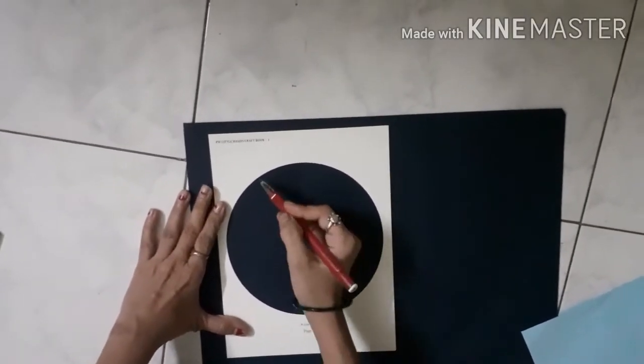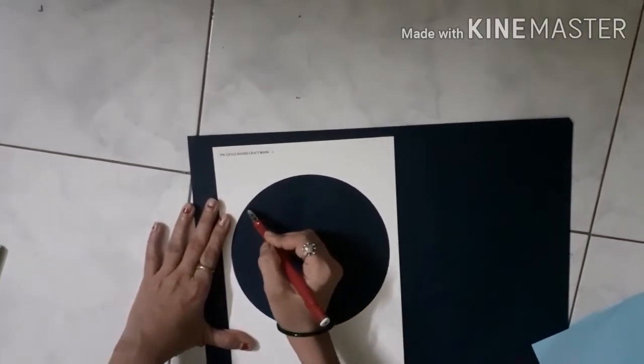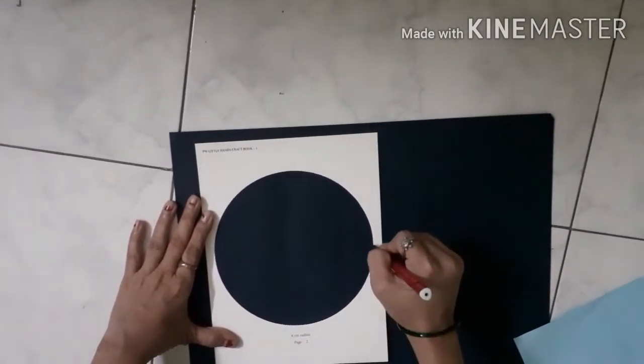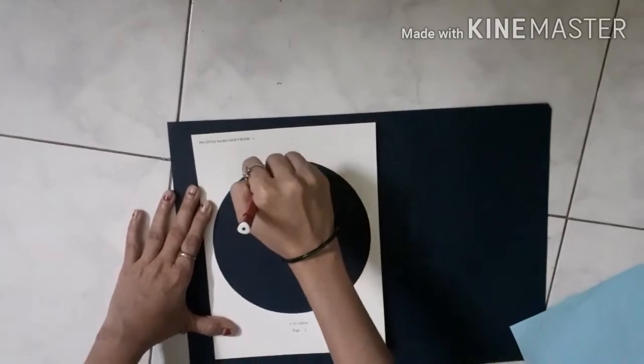Draw an outline like this. You can take your parents' help if needed. After that, use scissors to cut out the circles.